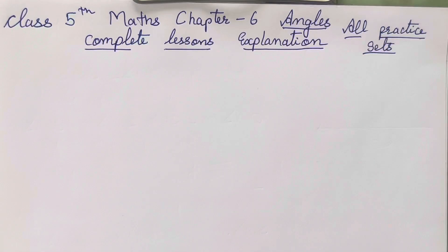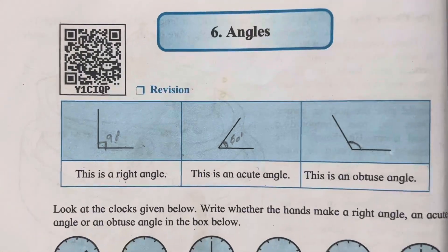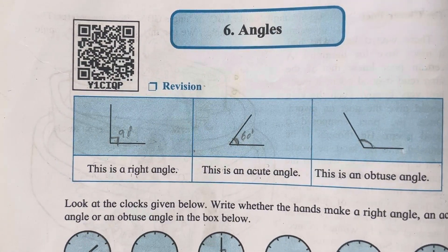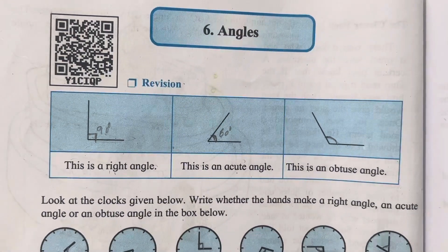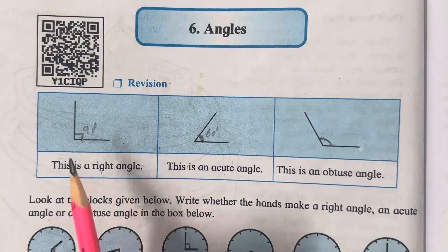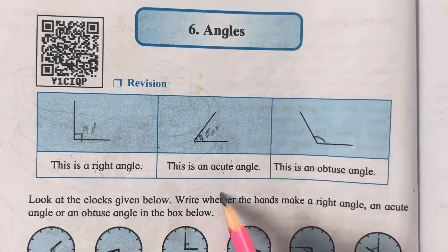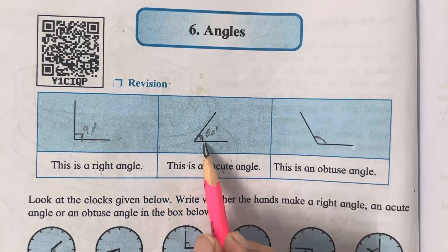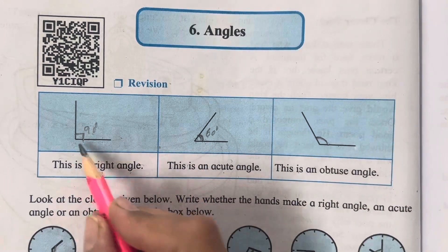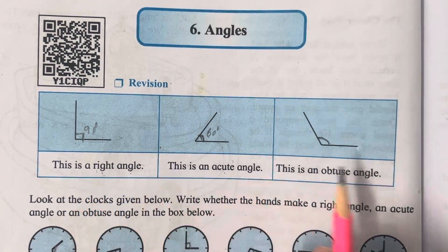Hello everyone, welcome back to my channel. Today we will be studying Class 5th Math Chapter 6: Angles. In this video I am going to complete the entire chapter. First we are going to revise the different types of angles. The three main types are: right angle which is 90 degrees, acute angle which is less than 90 degrees, and obtuse angle which is more than 90 degrees.